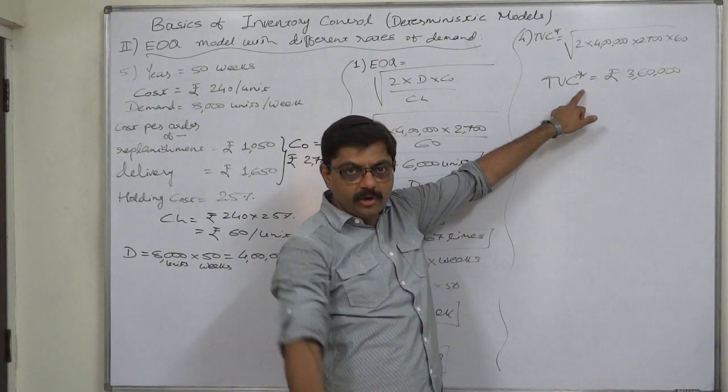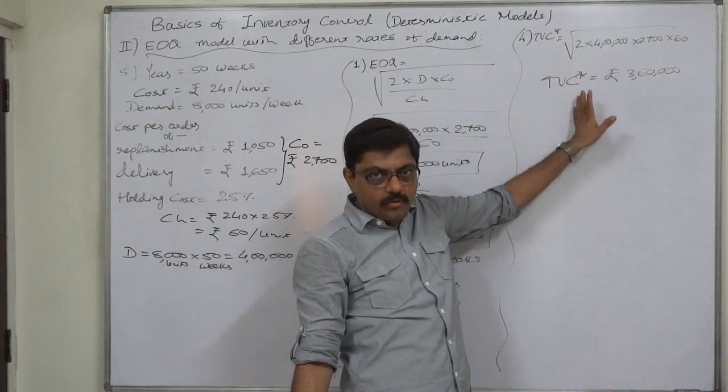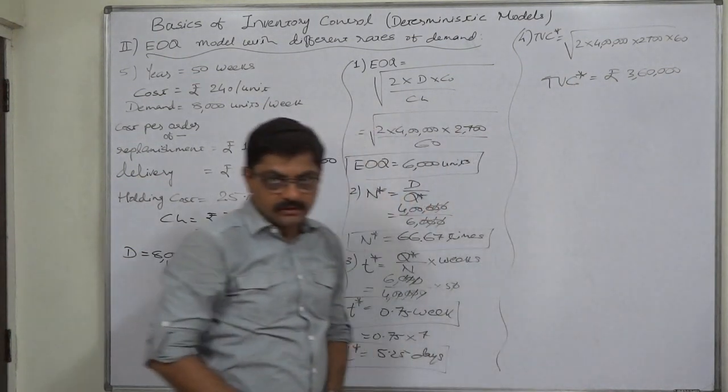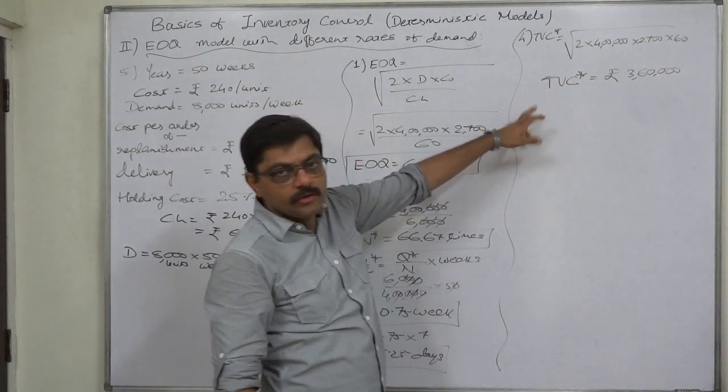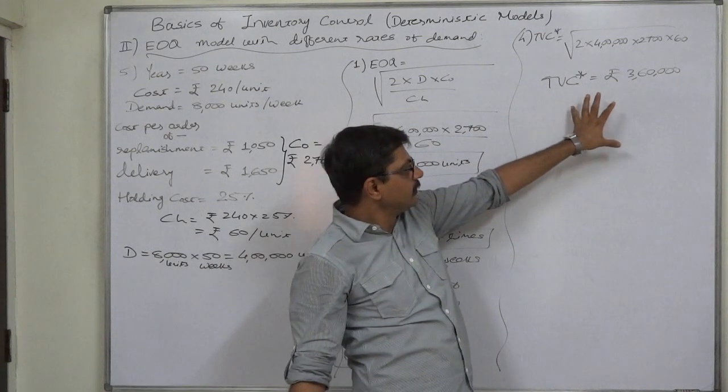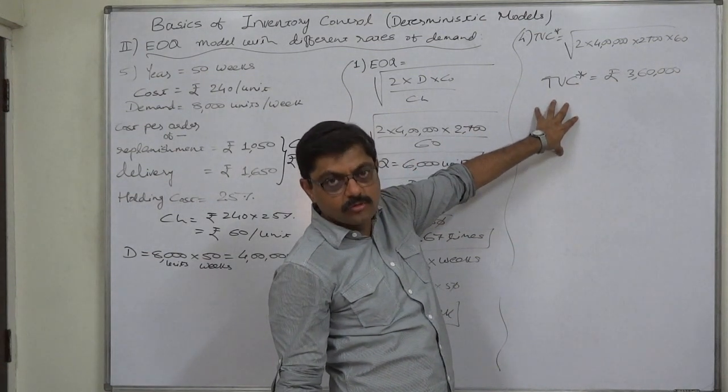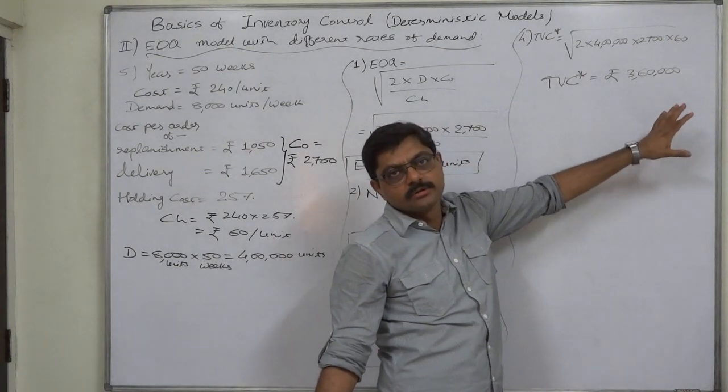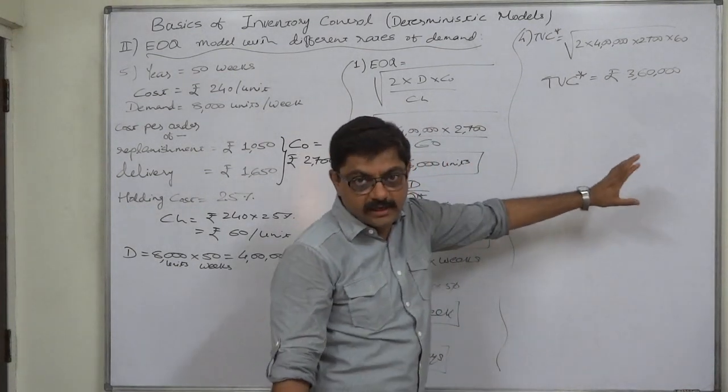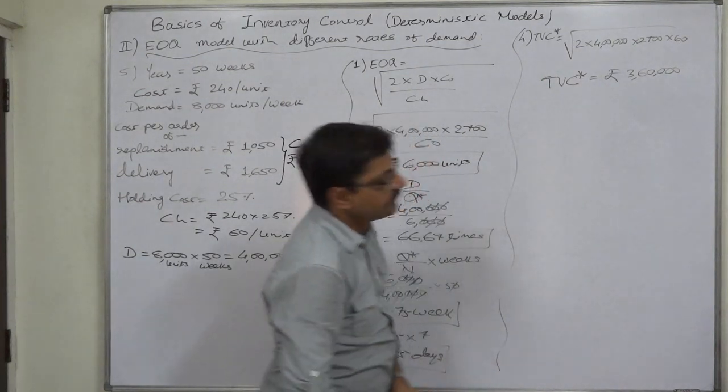Here friends, I advise you all to calculate TVC by another formula: total ordering cost plus total carrying cost. Also calculate TVC by that formula. You will find that total ordering cost comes to rupees 1 lakh 80,000 or 180,000, as well as the total carrying or holding cost 1 lakh 80,000 or 180,000, and the TVC will come to rupees 360,000 by that formula also.